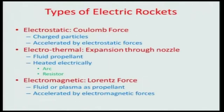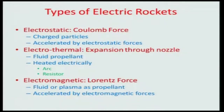In the last lecture, I discussed the three types of primary electric propulsion systems: electrostatic, electrothermal, and electromagnetic. We have already discussed the electrostatic propulsion system, which operates by Coulomb force. Today, what we are going to discuss are the other two varieties — electrothermal and electromagnetic propulsion systems.